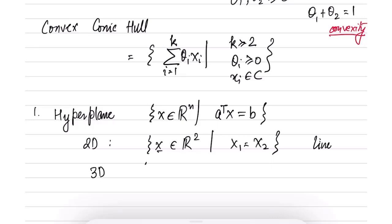In 3D, in three dimensions, x in R3, for example, let us say that x3 equal to 0 is a valid restriction. This is a single equation.